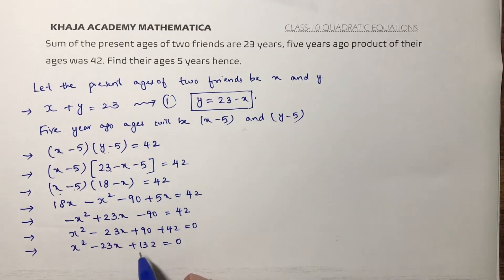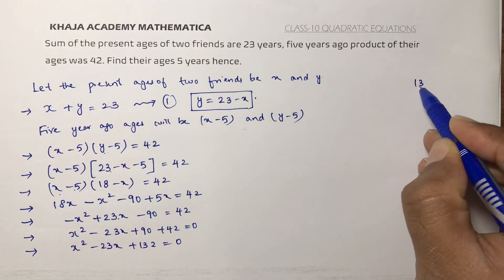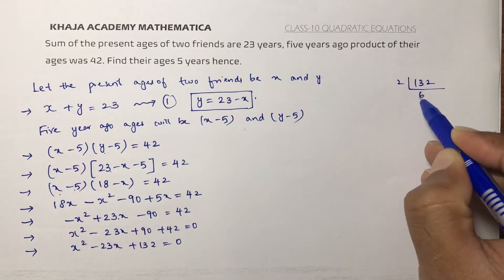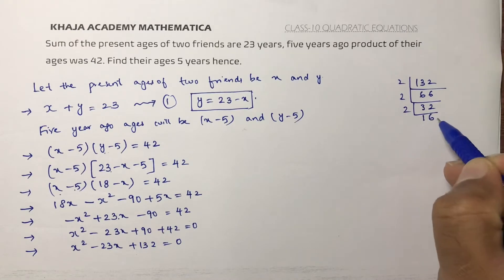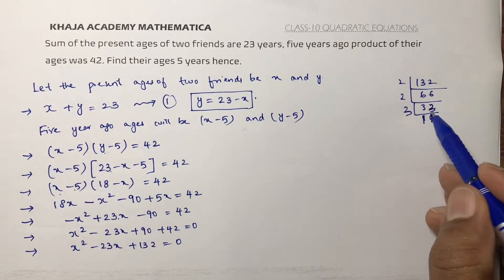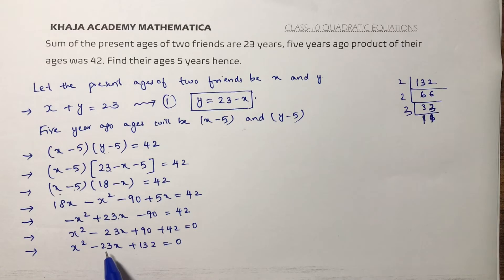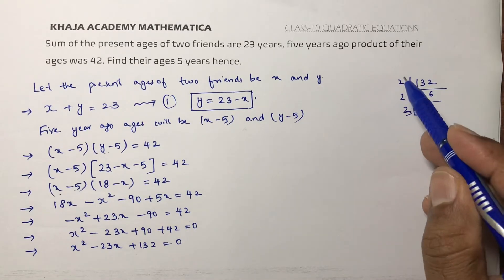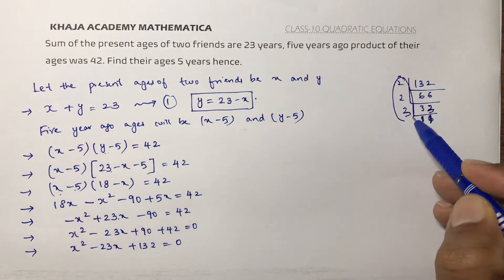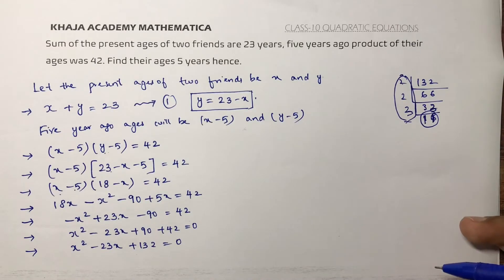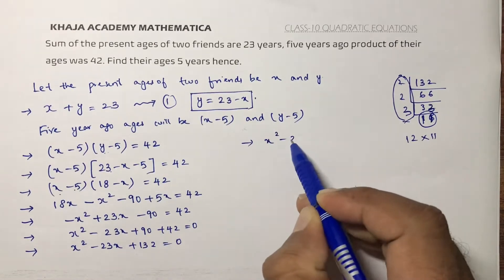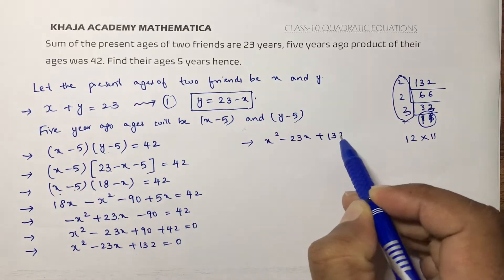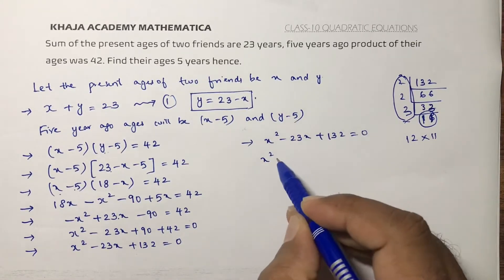Now factorize x squared minus 23x plus 132. Finding the prime factors of 132: 2 times 2 times 3 times 11. We need two factors that multiply to 132 and add to 23. That gives us 12 and 11, since 12 times 11 equals 132 and 12 plus 11 equals 23. So we split the middle term as 12x and 11x.